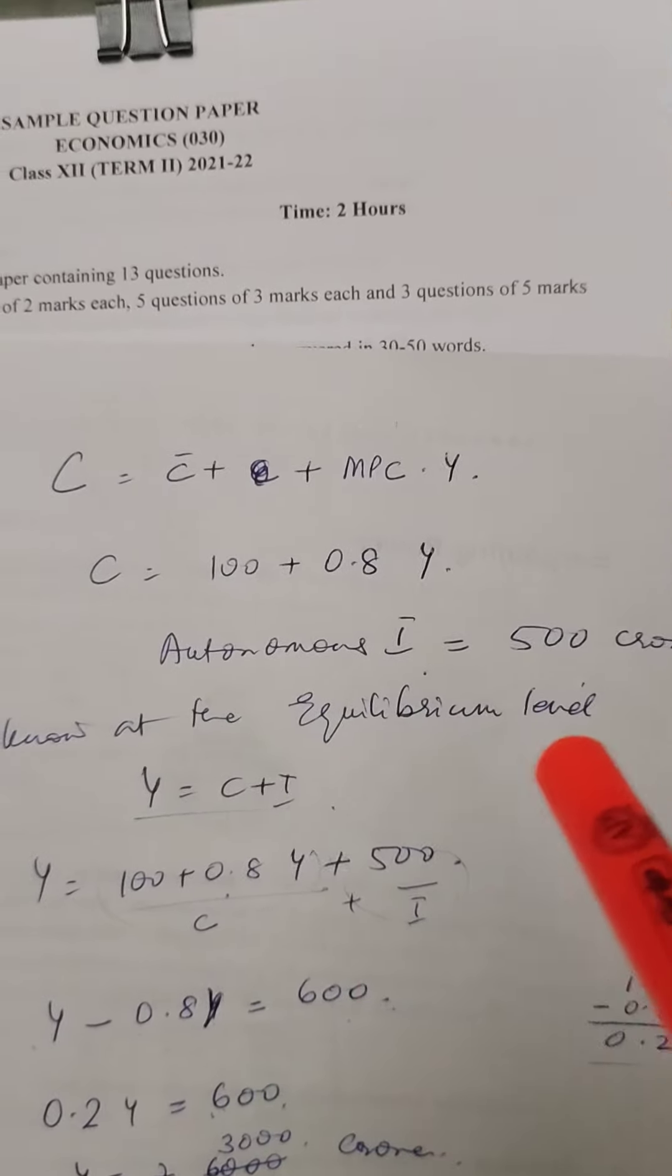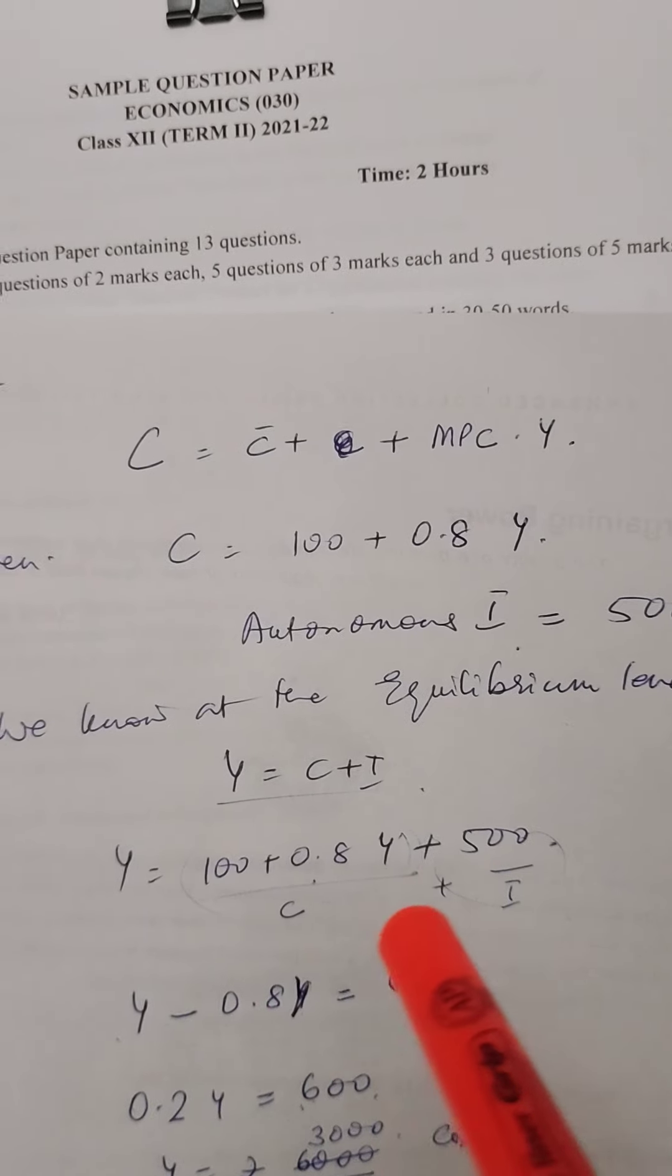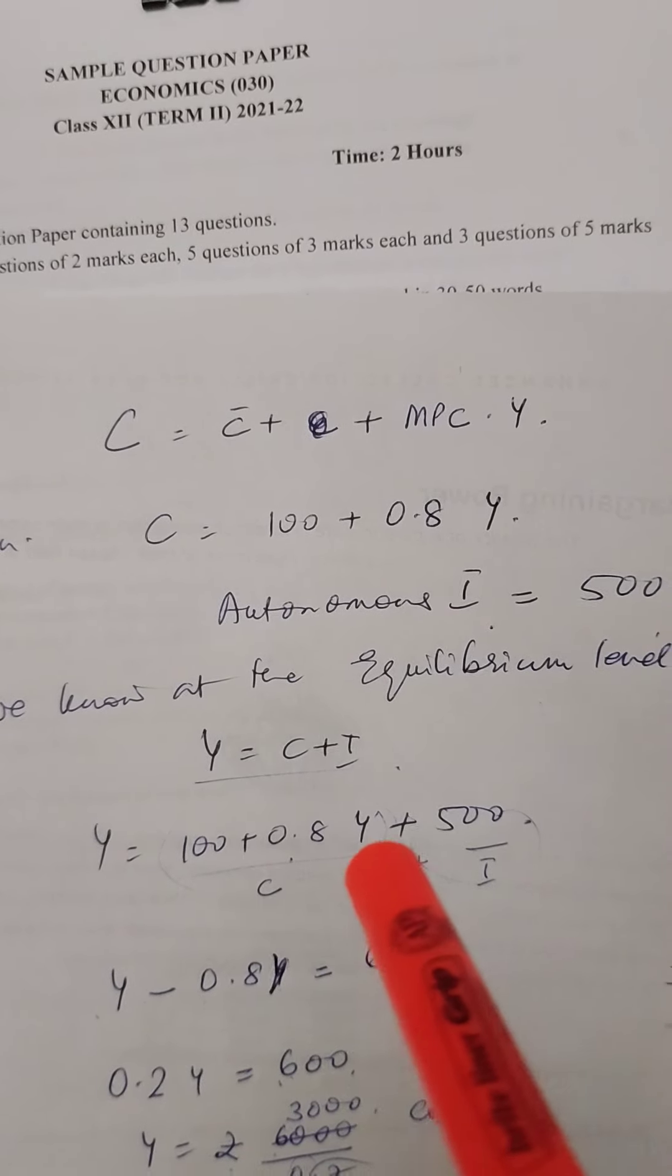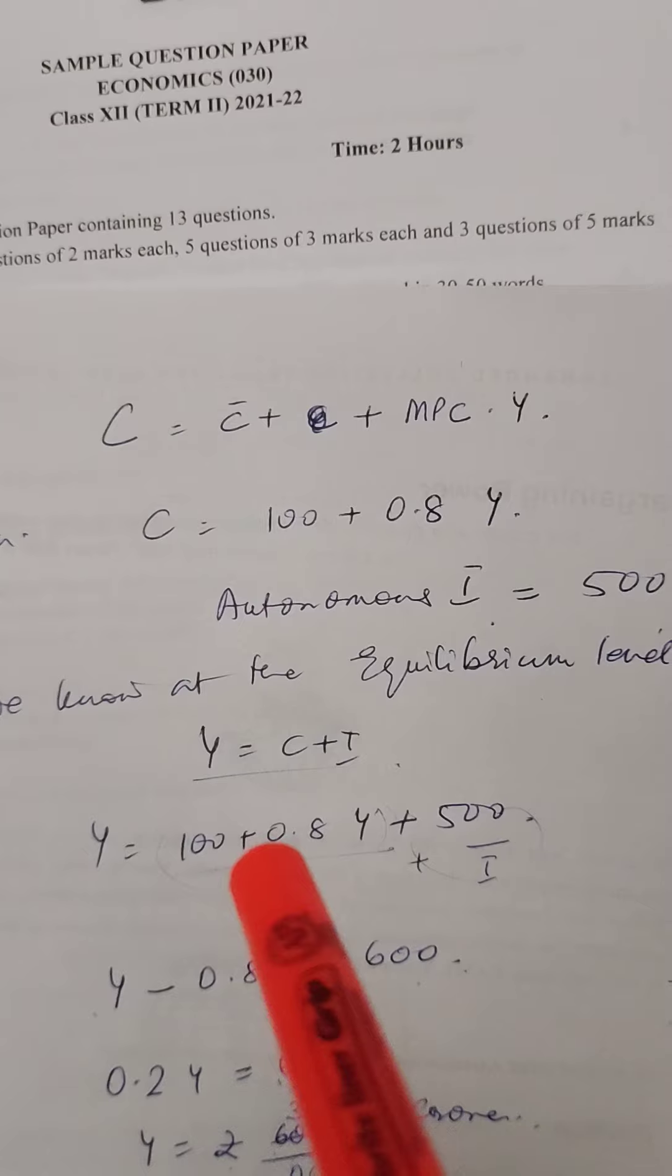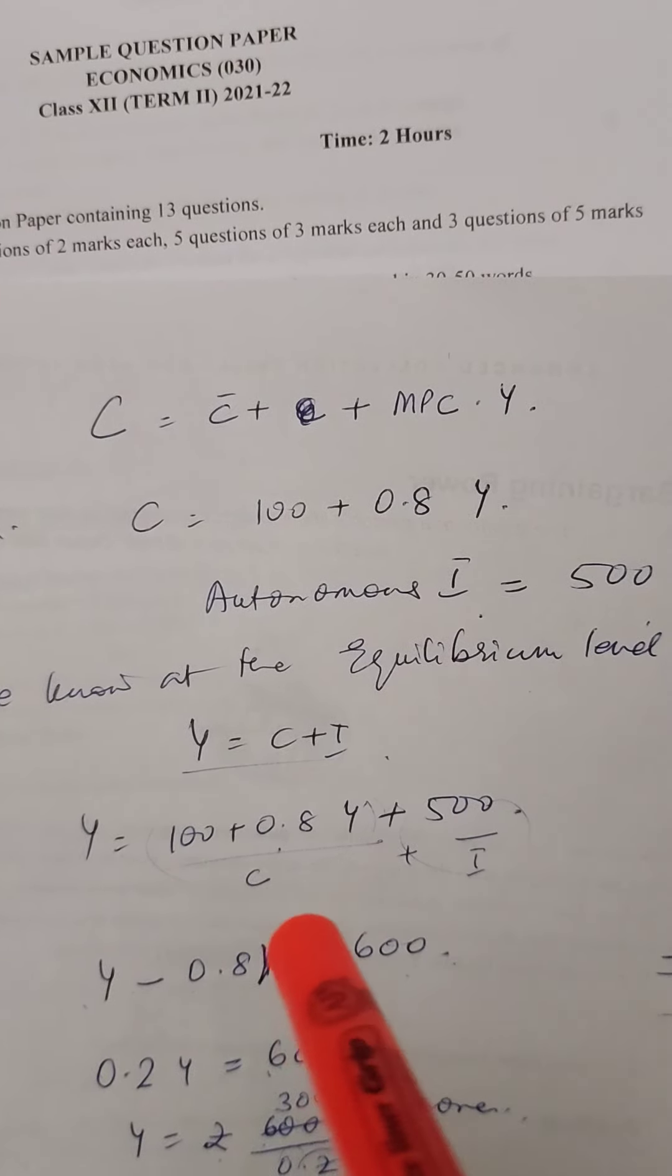We know that at the equilibrium level, Y = C + I. So let's just put the values. Y = 100 + 0.8Y + 500 (that's investment, C + I).